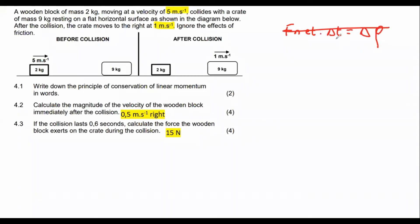When we have two objects and they're just talking about the velocity and the mass, then we are rather going to use the sum of the momentum initial is equal to the sum of the momentum final.